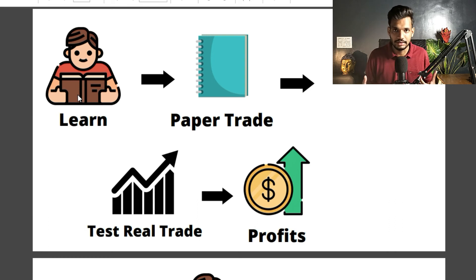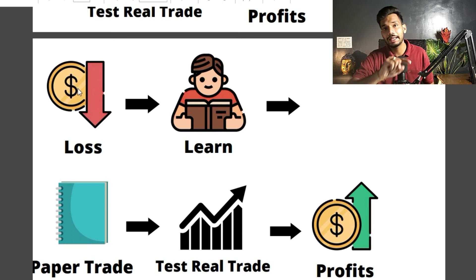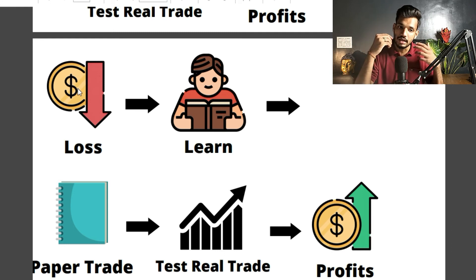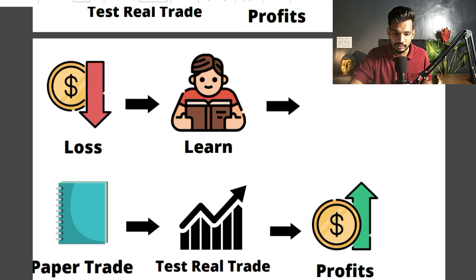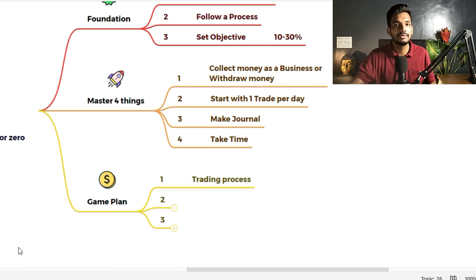Through real trading you will gain experience of how markets work and how profits and losses happen. If you are making profits, great. If you are in losses, then follow the process again — learn, do paper trade, test with real trade — keep repeating until you reach profits. Follow this process: if in losses, learn from your mistakes, maintain a journal, do paper trading, analyze mistakes, then test with real trade, and repeat until you are consistently in profits.